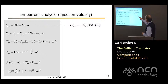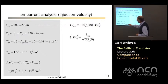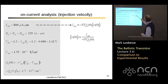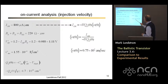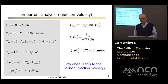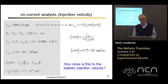We know that on-current is related to the average velocity at the top of the barrier, and we've deduced the charge there. Taking the measured on-current and the deduced charge, we can calculate the average injection velocity at the top of the barrier. The result is 0.75 times 10 to the 7th centimeters per second. Our question now is: how close is this to the ballistic limit?